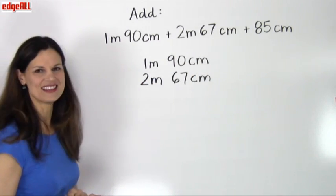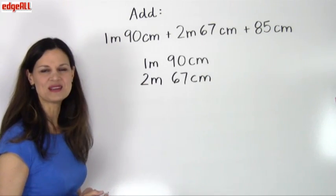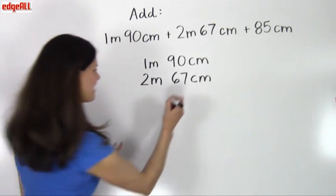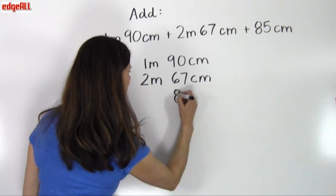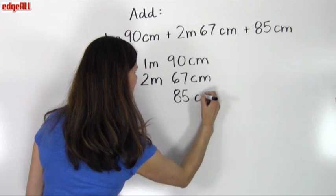Lined up vertically, meters are going to go here in this column, centimeters here in this column. And I still have a third measurement to add, which is my 85 centimeters. So 85 centimeters.